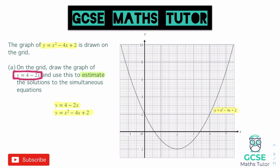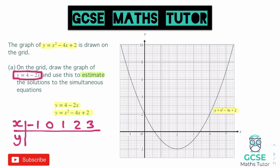The first thing we need to do is draw the graph of y equals 4 minus 2x. You need to know how to draw linear graphs for this. Using a table of values with x equals negative 1, 0, 1, 2, 3: y equals 6, 4, 2, 0, negative 2 respectively — going down in 2s each time. Plot those coordinates and then extend the line using a ruler.